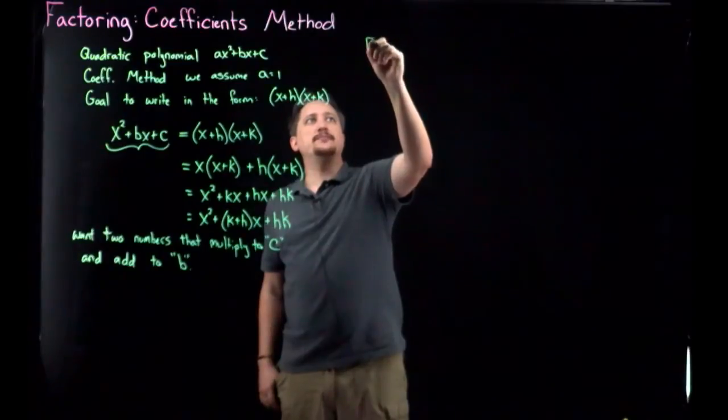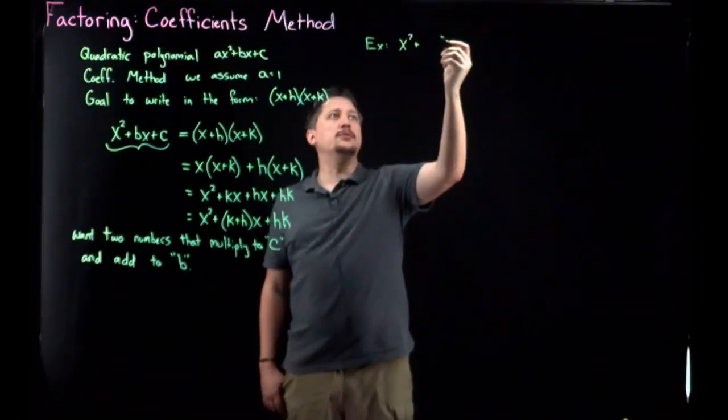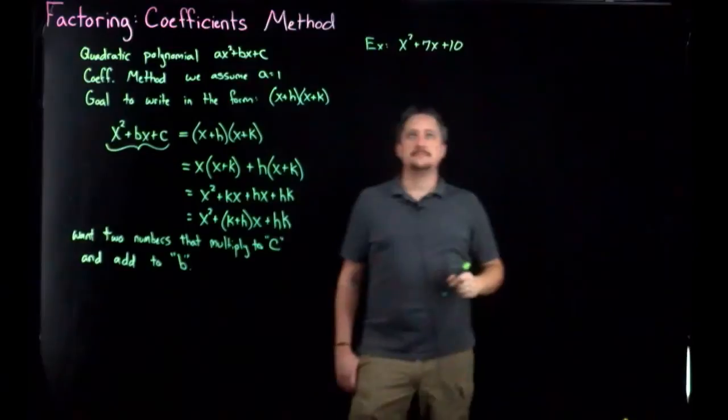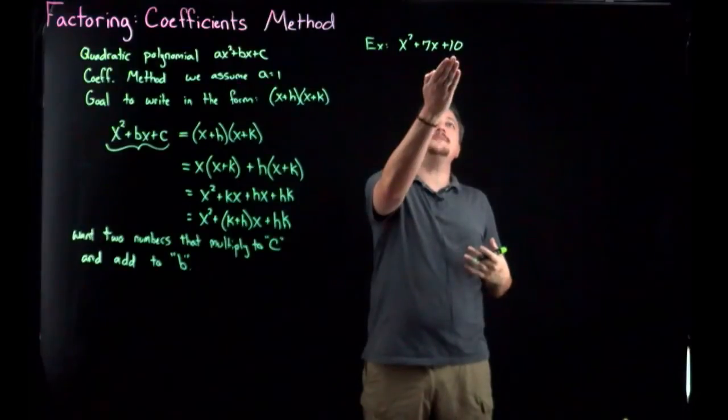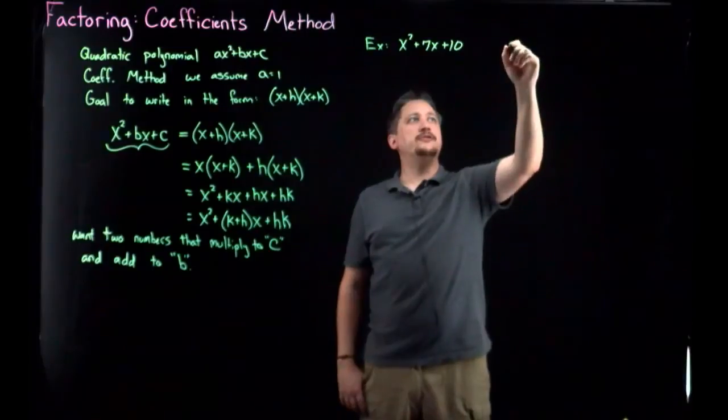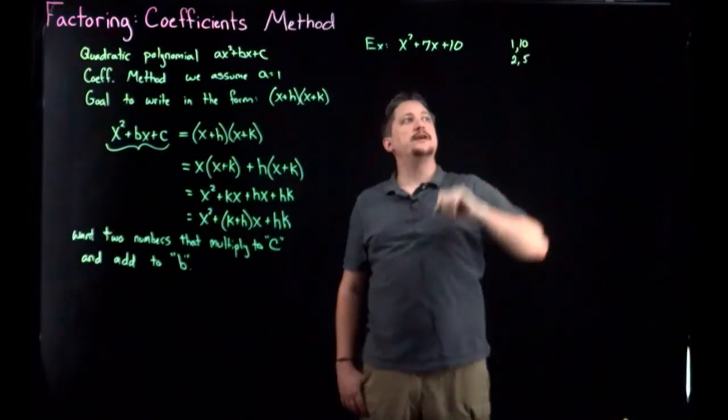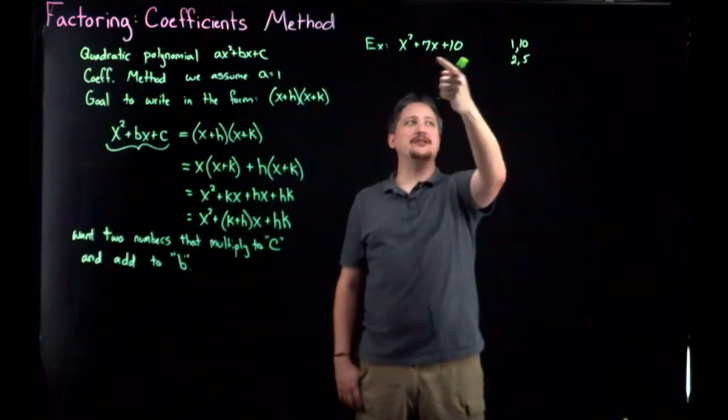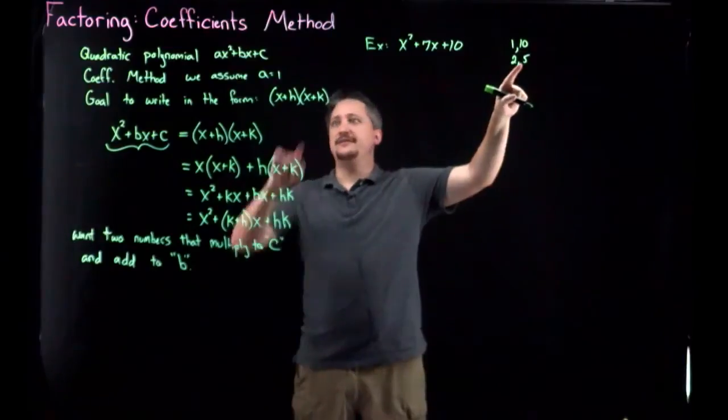So again, this is easiest to see with a concrete example. So let's look at, for example, x squared plus 7x plus 10. So I want to factor this using the coefficients method. So I want to look at two things that multiply to 10 but add to 7. So I can look at any pair of things that multiply to 10. So I could have 1 and 10, that multiplies to 10. I could have 2 and 5, that multiplies to 10. That's pretty much it. 1 and 10, those add to 11, that's not going to work. 2 and 5, that adds to 7, so that works. So these represent my h and k.